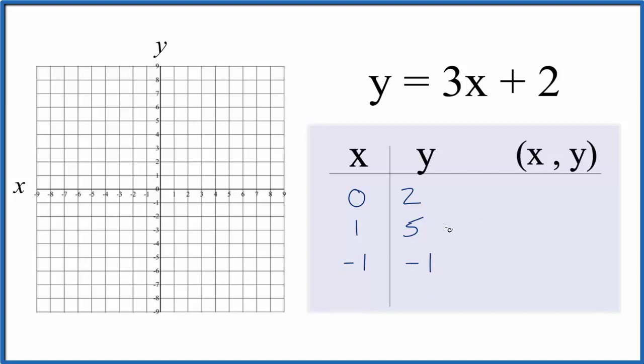So these are the points we can graph. So for the first one, 0 comma 2, we go over to 0 for x, 2 for y.